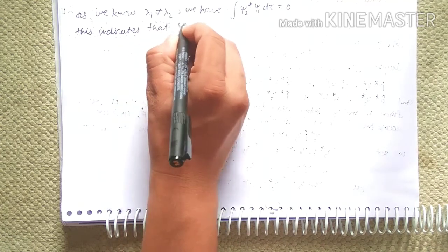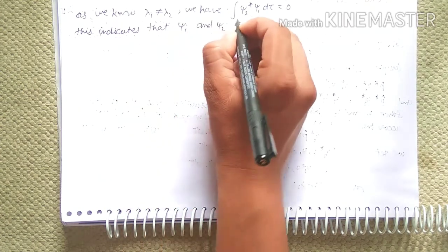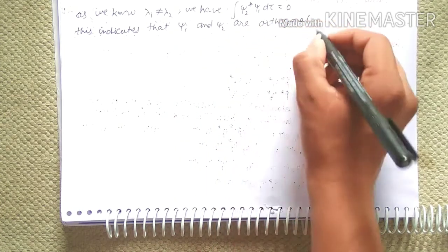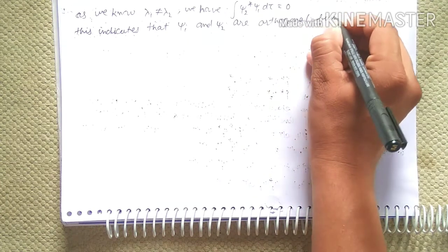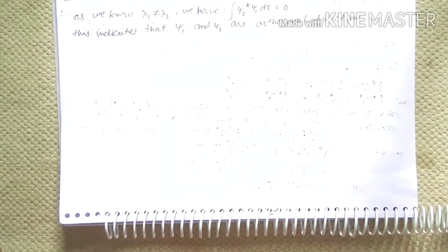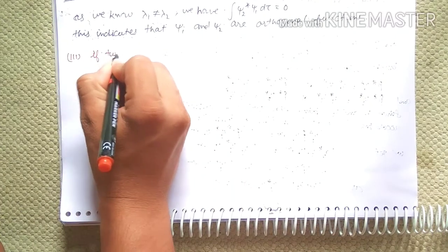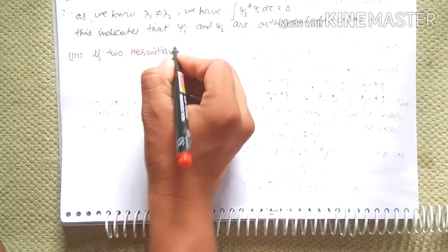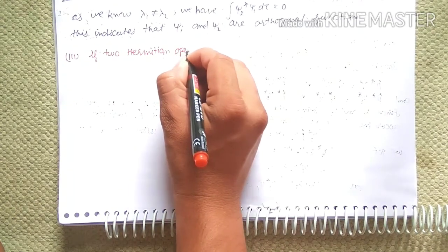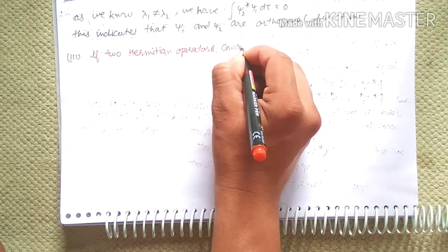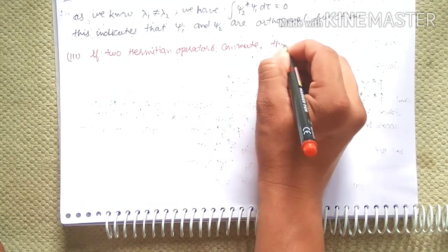This indicates that chi-1 and chi-2 are orthogonal functions. Property three: If two Hermitian operators commute, then their product is also a Hermitian operator.